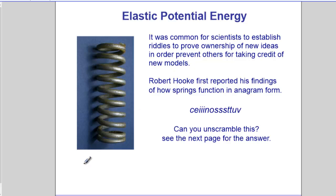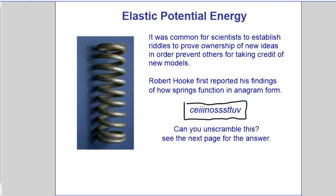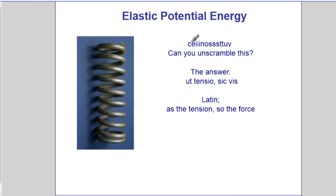Hooke reported his findings of how a spring works in terms of an anagram. When we unscramble the letters, we end up with 'ut tensio sic vis' — excuse my Latin — which translates to 'as the tension, so the force.' So force is caused by tension, or in other words, force is related to displacement.